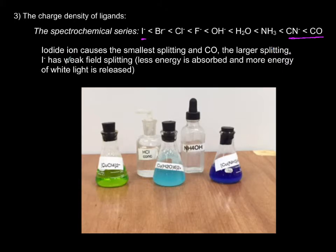It's also sometimes known as weak field splitting for iodide, which means less energy of the white light is absorbed, and more energy of white light is going to be reflected.